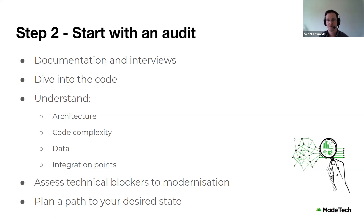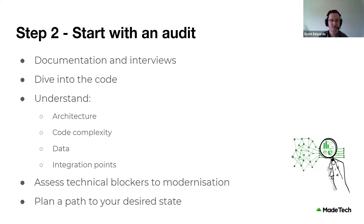From a technical perspective, you need to understand a few things. First, architecture — how the applications are glued together, whether there's a defined architecture or if things were ad hoc. Then code complexity — are you looking at hundreds or hundreds of thousands of lines? Is it spaghetti code or is there some structure? Very importantly, look at your data — where it lives, how it's accessed, whether there are quirks or inconsistencies in the data model, and critically, whether there's secure data involved such as GDPR and data protection impact assessments. Finally, look at the integration points — what applications send and receive data, and who relies on those endpoints.